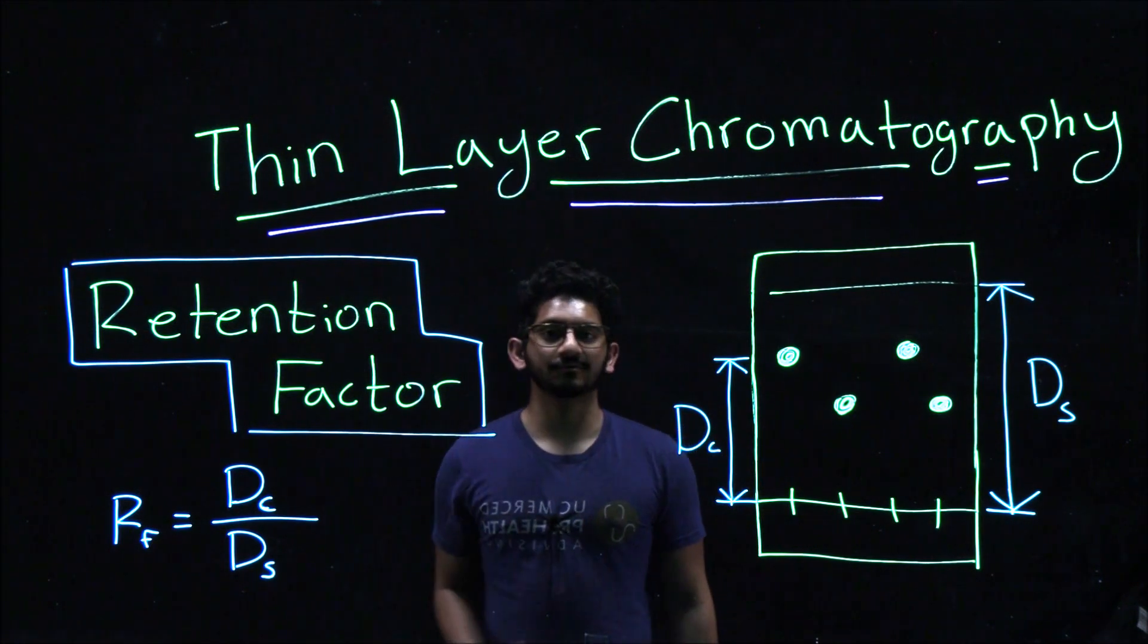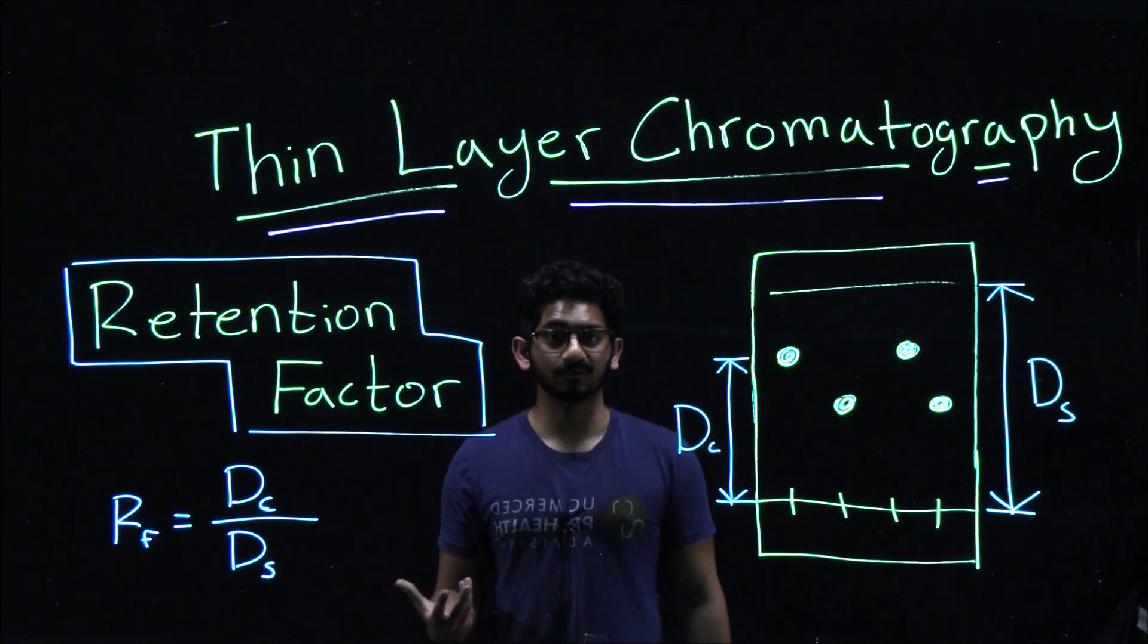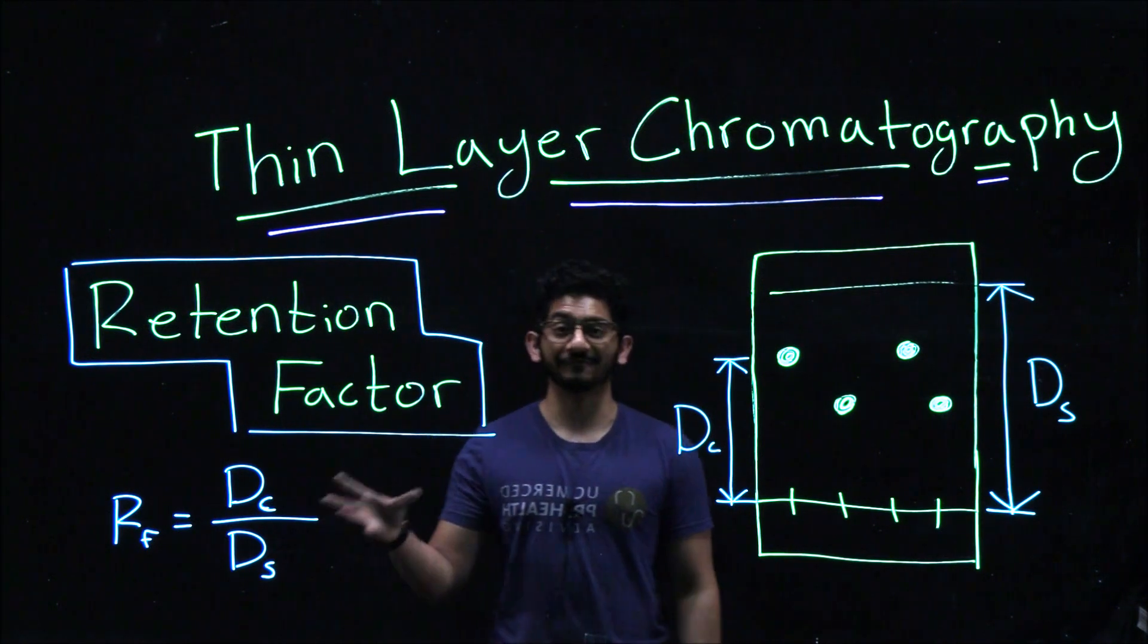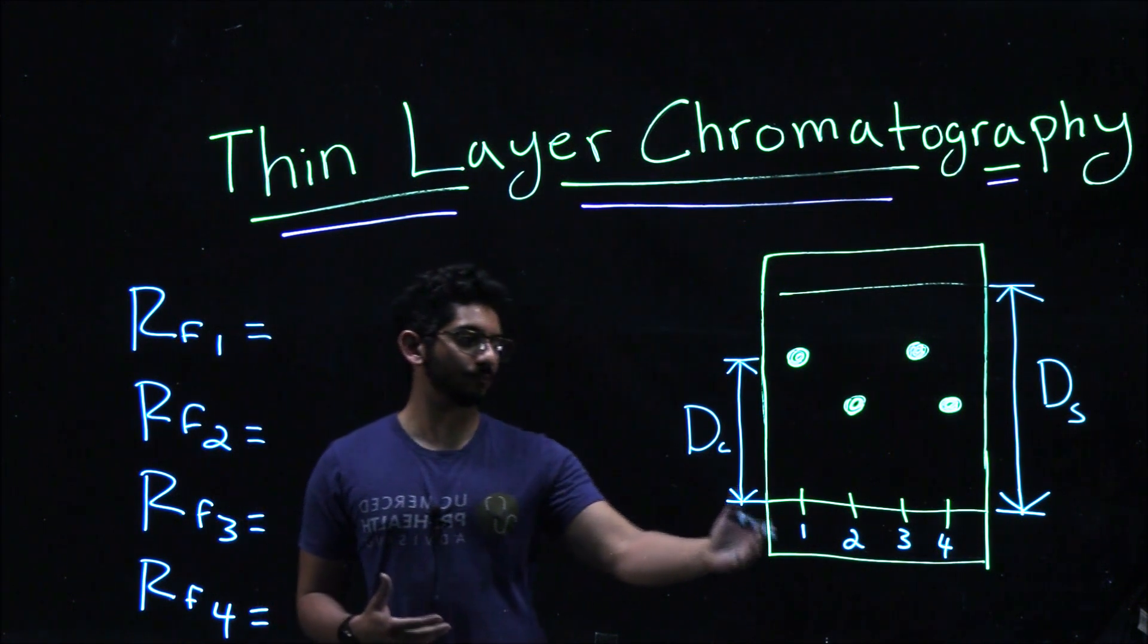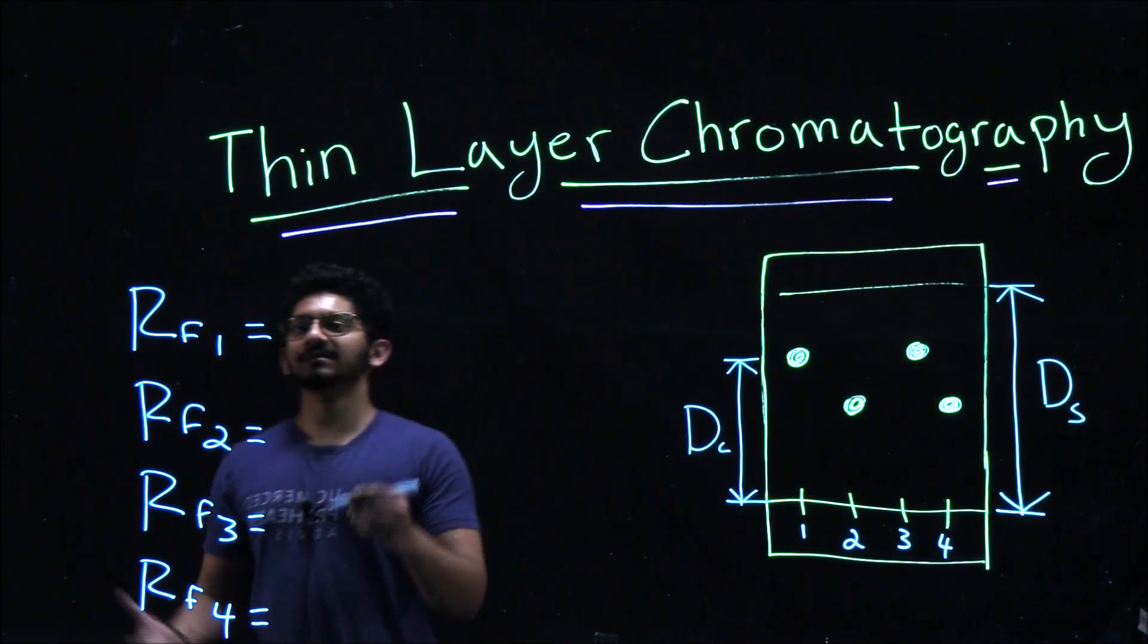If you divide these two, you will get a number less than 1, and that would be considered your RF value. For example, with our spots right here between 1 and 4, we can calculate the RF values.